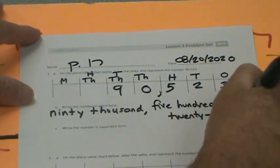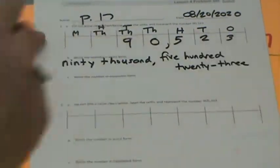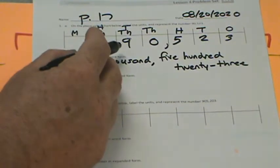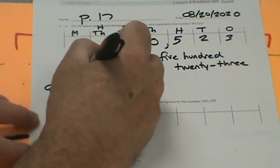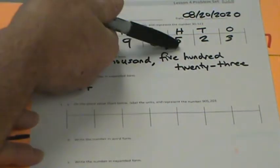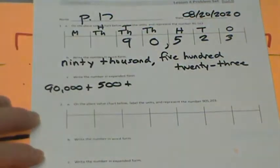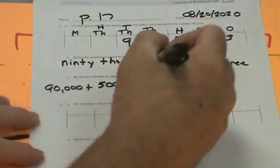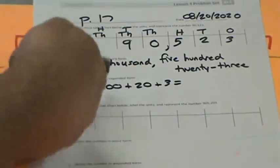Let's write the number in expanded form. Expanded form is we take each place value: 90,000 plus 500 plus 20 plus 3 equals 90,523.